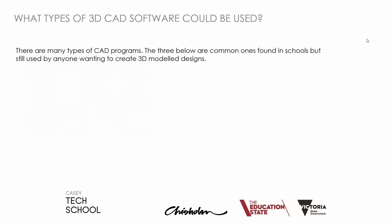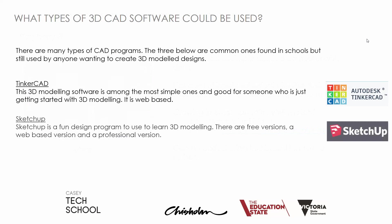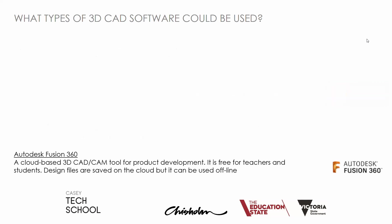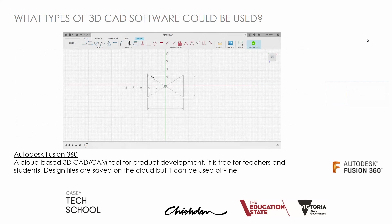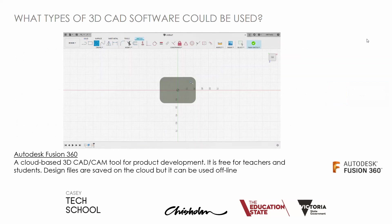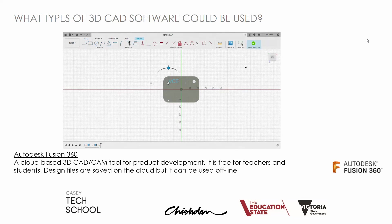For 3D CAD software, there are three popular ones: Tinkercad, which is very simple; SketchUp, which has an online version; and Autodesk Fusion 360, which I recommend. It's professional level, and the beauty of it is that it's free to students and teachers. You can download it for free, there are plenty of tutorials on the internet, and Casey Tech School has a YouTube video on how to use this CAD program.